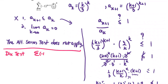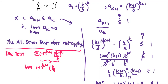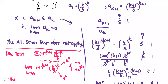For the summation of negative 1 to the k plus 1 times k over 3 to the power k, we find the limit of the terms — negative 1 to the k plus 1 multiplied by k over 3 raised to the power k — as k approaches infinity. As k approaches infinity, k to the power k approaches infinity faster than 3 to the power k, so the expression approaches negative infinity or positive infinity, which is not equal to 0. Therefore, the series diverges by the divergent test.